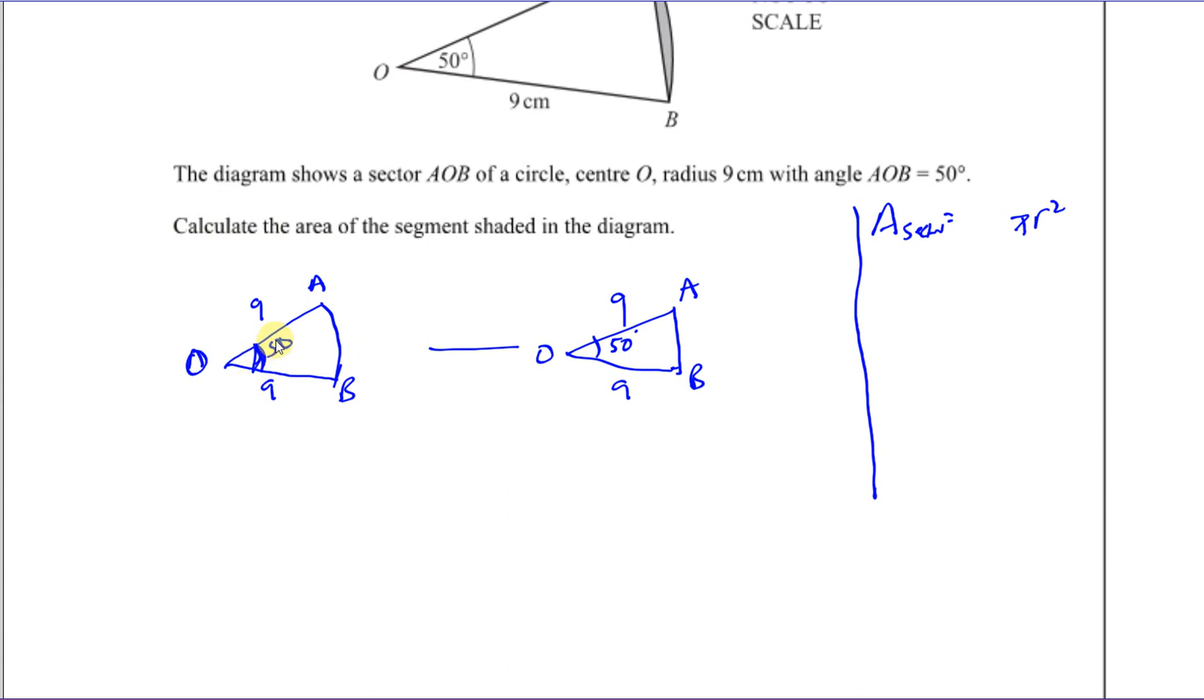The fraction of the area that this is of the whole circle is the same fraction that this angle makes with 360 degrees. So it's 50 over 360 times πR². The area of a sector is basically the angle θ over 360 times πR². For this it will be 50 over 360 times π times 9 squared. That will be the area of the sector.